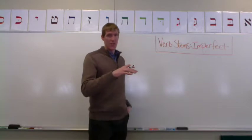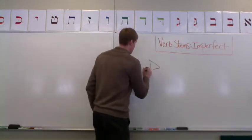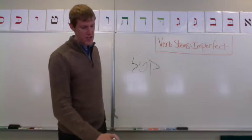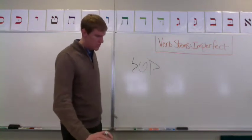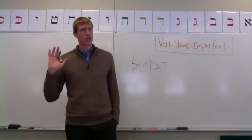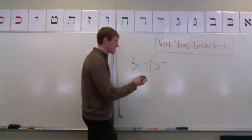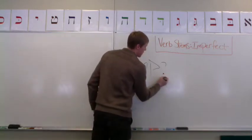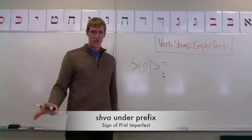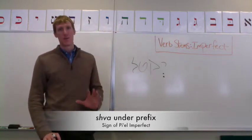So the voice is active and the action is intensive. We have our root here again — kof, tate, lamed — following along. We're at the bottom of page 86 here. And what you want to look for, your clear-cut sign of the PL imperfect — there are two. The first will be a sheva under the prefix. A sheva under the prefix is a very clear sign that you've got the PL imperfect.